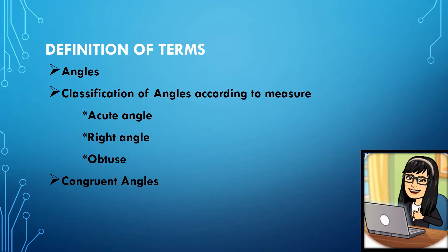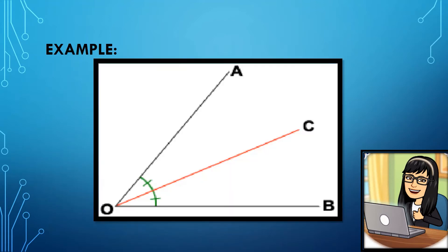Congruent angles are angles which have equal measure. Angle bisector is a ray that splits an angle into two congruent angles. To explain these concepts, let's have this figure. We have angle AOB, and ray OC is the angle bisector, so it bisects angle AOB. Therefore, angle AOC and angle COB are congruent angles. Given that angle AOB equals 60 degrees, since it is bisected by ray OC, the measure of angle AOC, which is 30 degrees, is equal to the measure of angle COB, which is also 30 degrees.